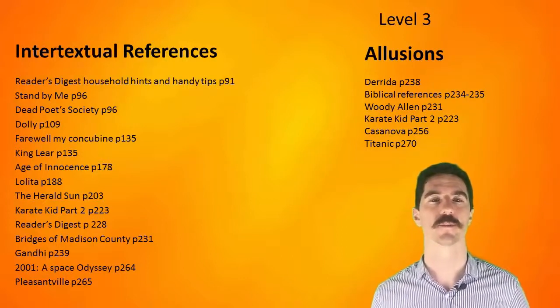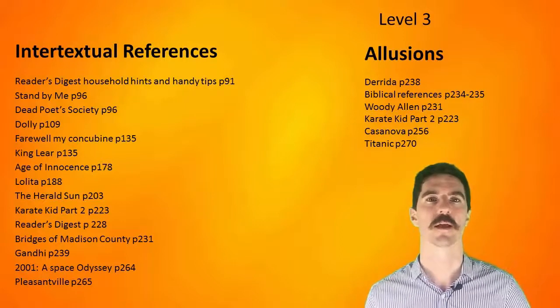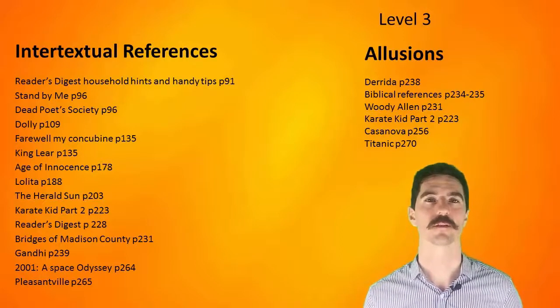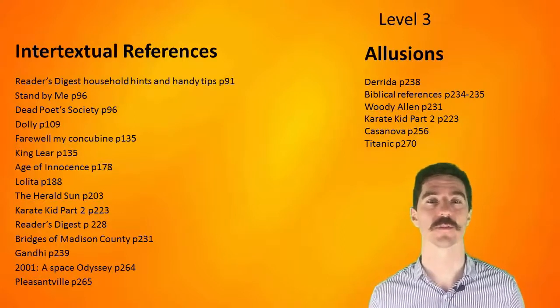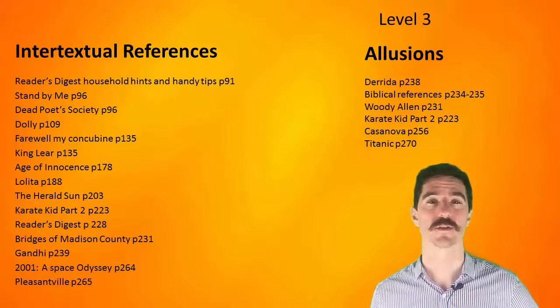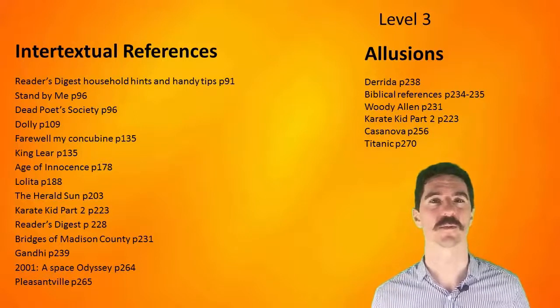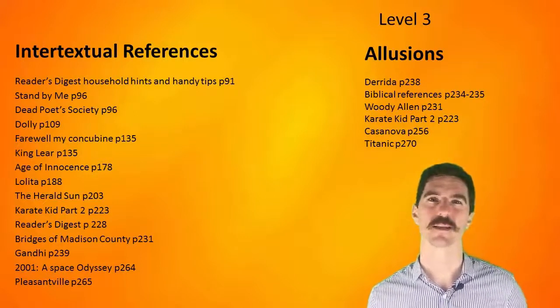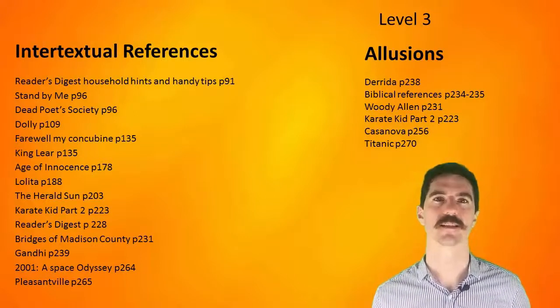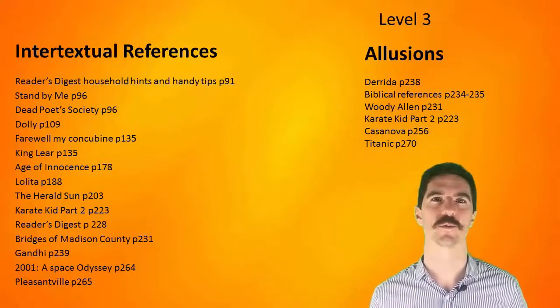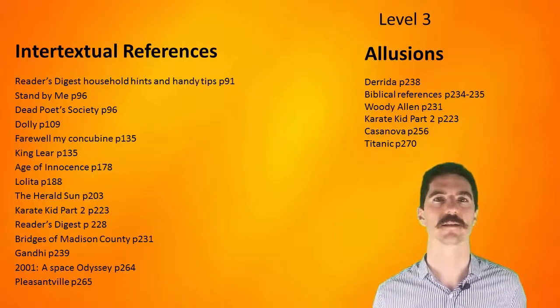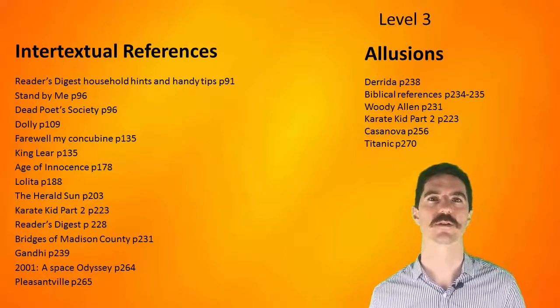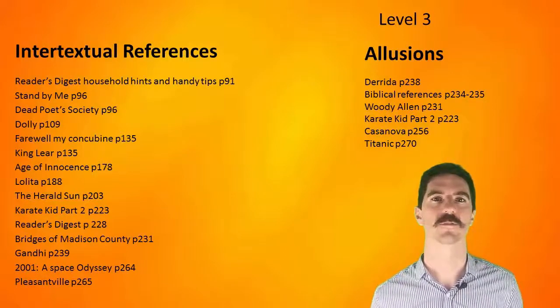An allusion is just a reference to something. A lot of these you won't find by yourself — you probably won't have the cultural knowledge to find them on your own. At least find the ones provided here, do two minutes or less of research on what they are, and try to understand what the allusions mean and how they relate to the story.